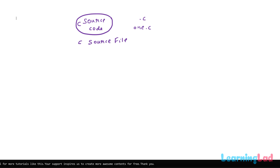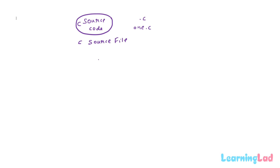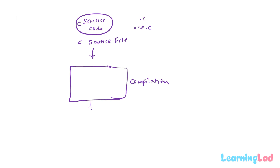Once we write the C program, we can't directly execute it on a computer because computers can only understand code written in binary language or machine code. That's why we need to convert the source code written in C to machine code, and we do that by performing the compilation process.